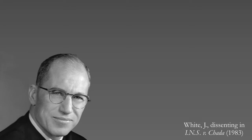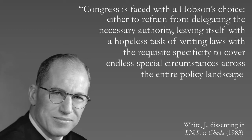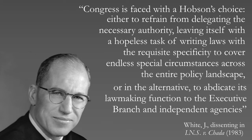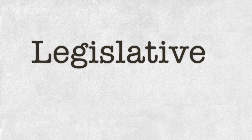Justice White described the dilemma this way. Congress is faced with a Hobson's choice: either to refrain from delegating the necessary authority, leaving itself with the hopeless task of writing laws with the requisite specificity to cover endless special circumstances across the entire policy landscape, or in the alternative, to abdicate its lawmaking function to the executive branch and independent agencies. To choose the former leaves major national problems unresolved; to opt for the latter risks unaccountable policymaking by those not elected to fill that role. But in the early 20th century, Congress thought it had found a way out of this dilemma by inventing the legislative veto.